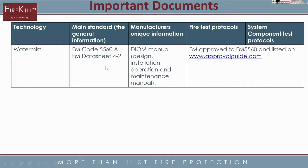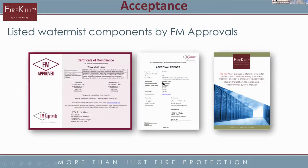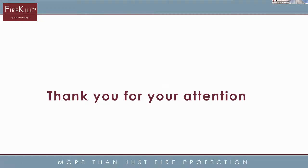The water mist codes for FM include FM Code 5560 and data sheet 4-2. The DIOM is still important to have, because otherwise you cannot install the system — it's different for each manufacturer and has to be FM approved. What you basically need to start installing the system is a certificate, the approval report from FM, and the DIOM from the manufacturer. These are what the manufacturer needs to give to the installer and to the AHJ, and some of it is also relevant for the fitters on site.